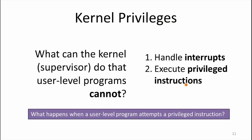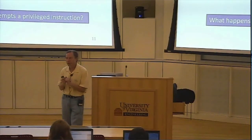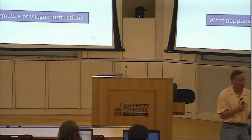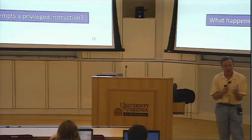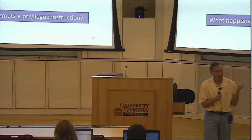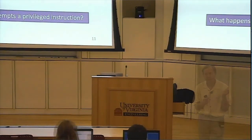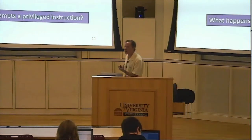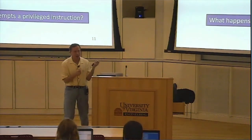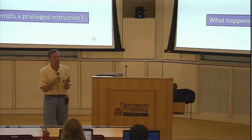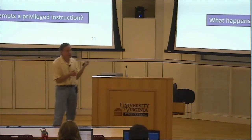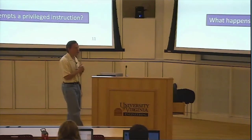What happens if a user-level program tries to execute a privileged instruction? The processor checks whether the program is privileged. It fails that check, so what happens? It's going to jump into the kernel. The processor won't allow the privileged instruction to execute, but instead of killing the user program or blowing up the machine, it calls into the kernel. Now the kernel is running in kernel space and has to decide what to do with the user-level program that tried to execute a privileged instruction.